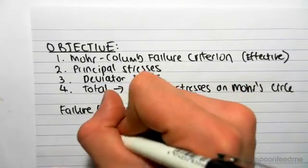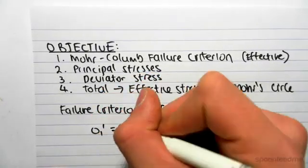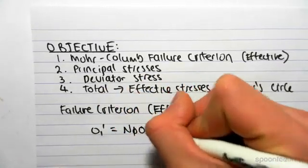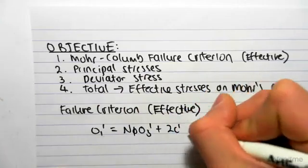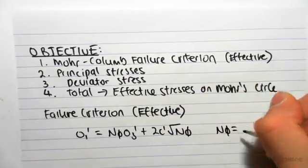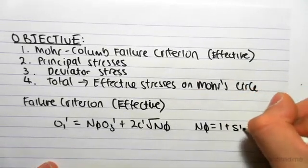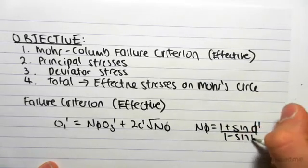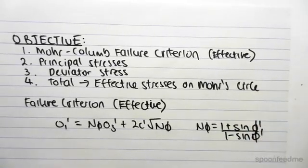So the formula is sigma 1 dash equals n subscript phi times sigma 3 dash plus 2c dash square root of n subscript phi, where n subscript phi equals 1 plus sin phi dash over 1 minus sin phi dash.